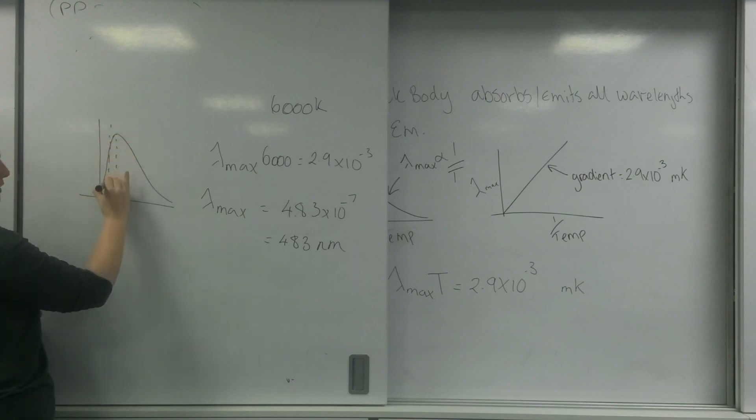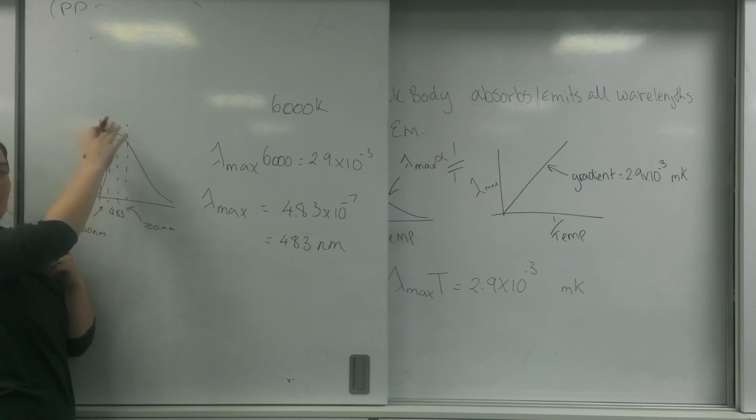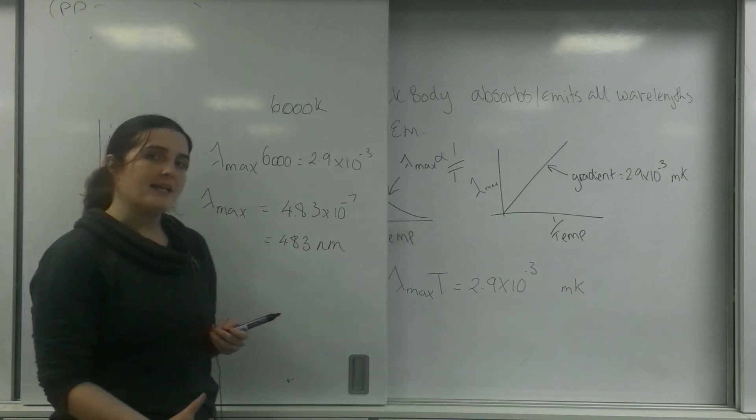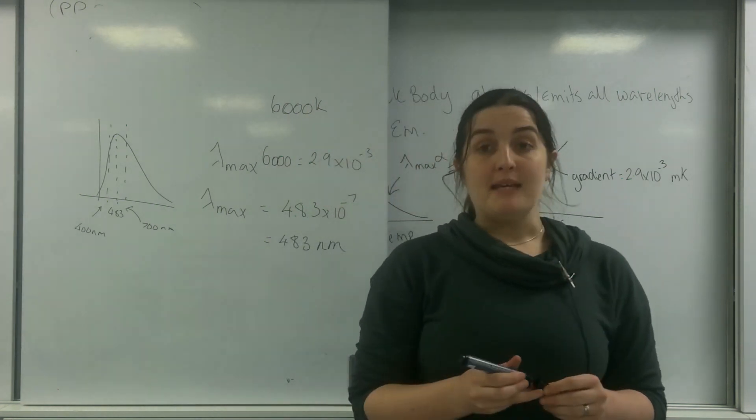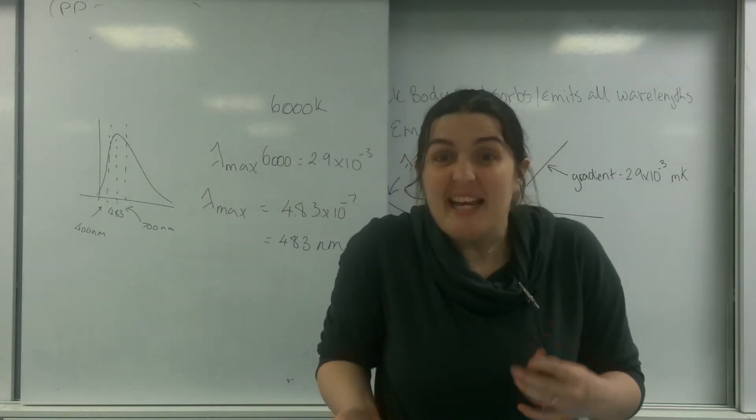Our peak wavelength is about 483, but I'm still going to have between 400 and 700 nanometers a significant amount of the rest of the spectrum. So I'm going to have some red and I'm going to have some yellow.